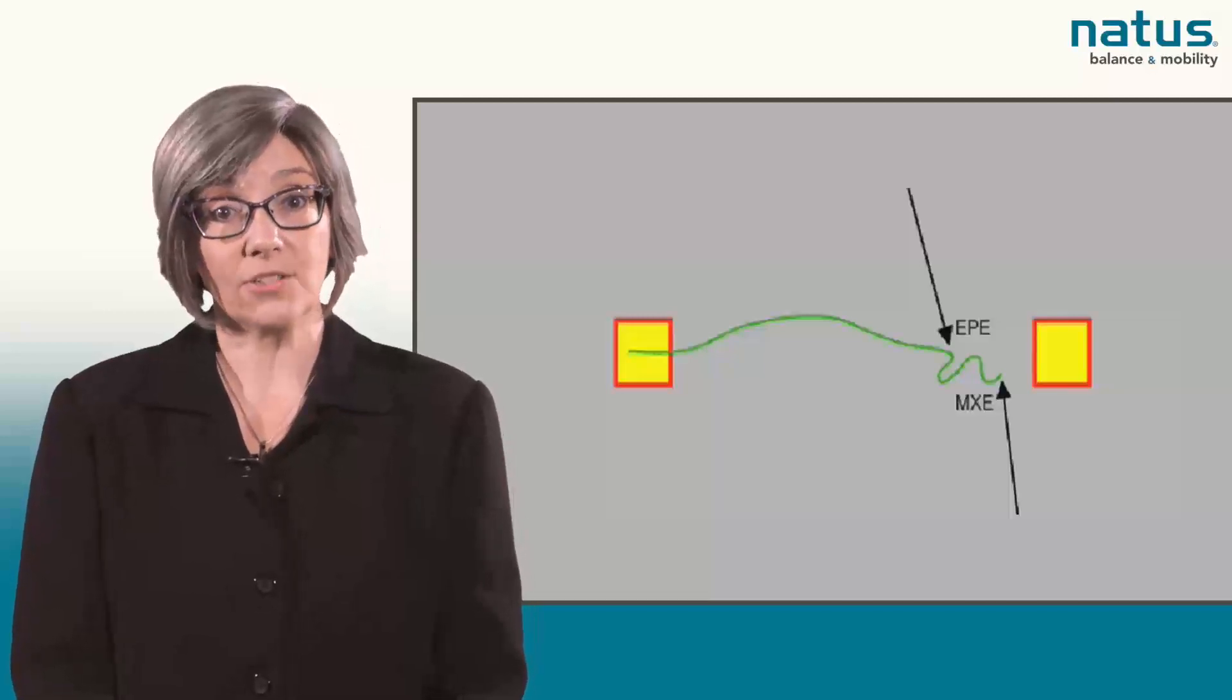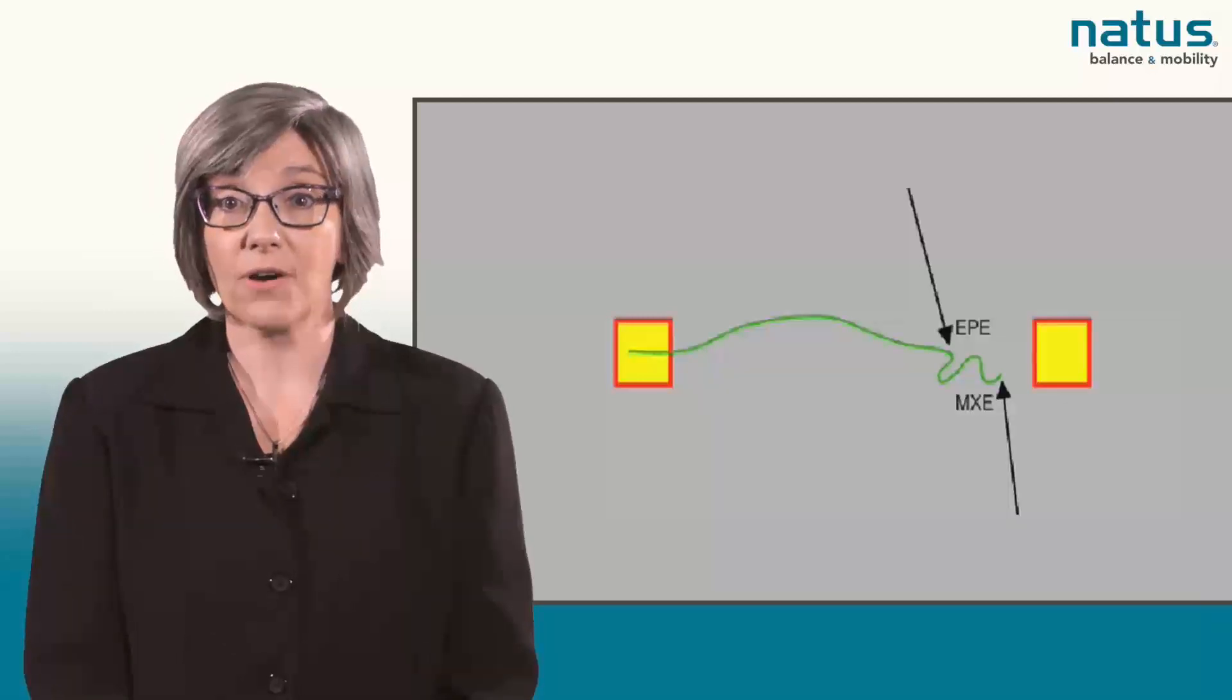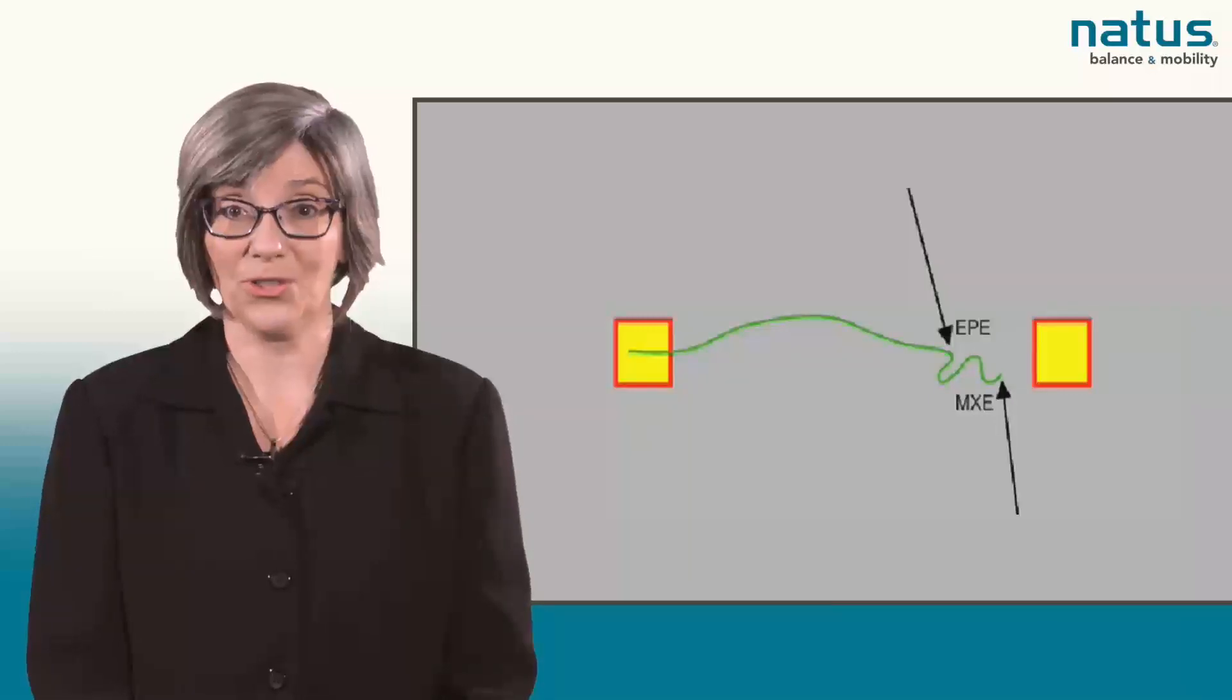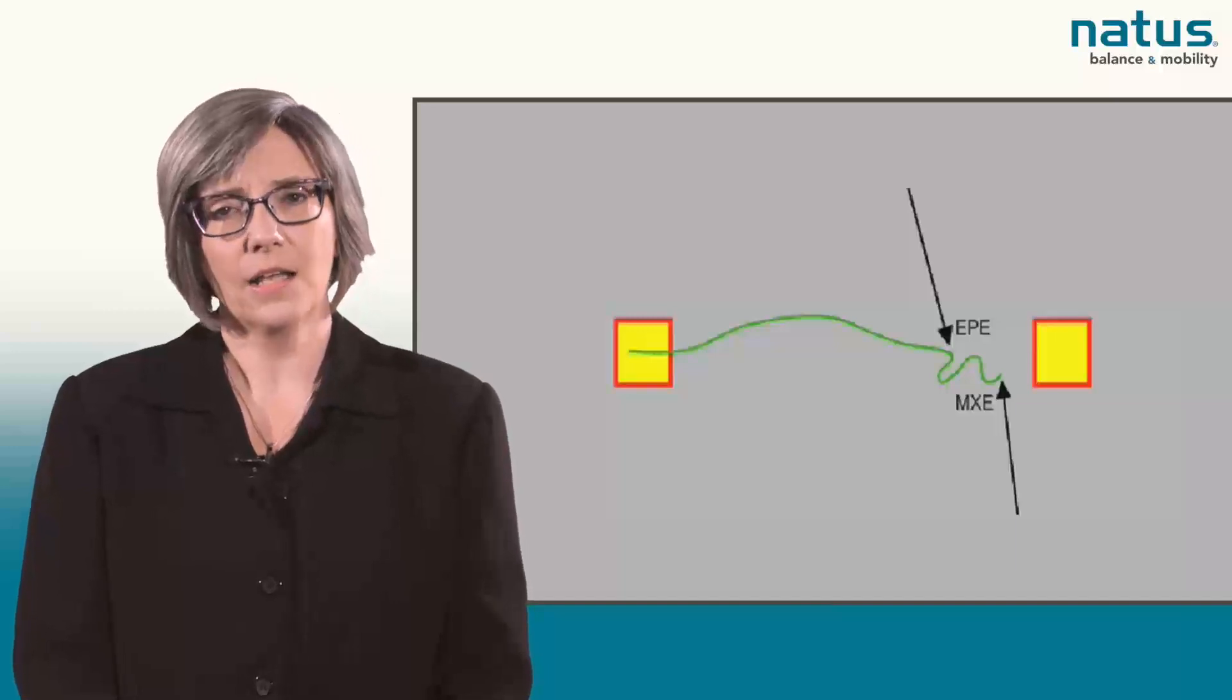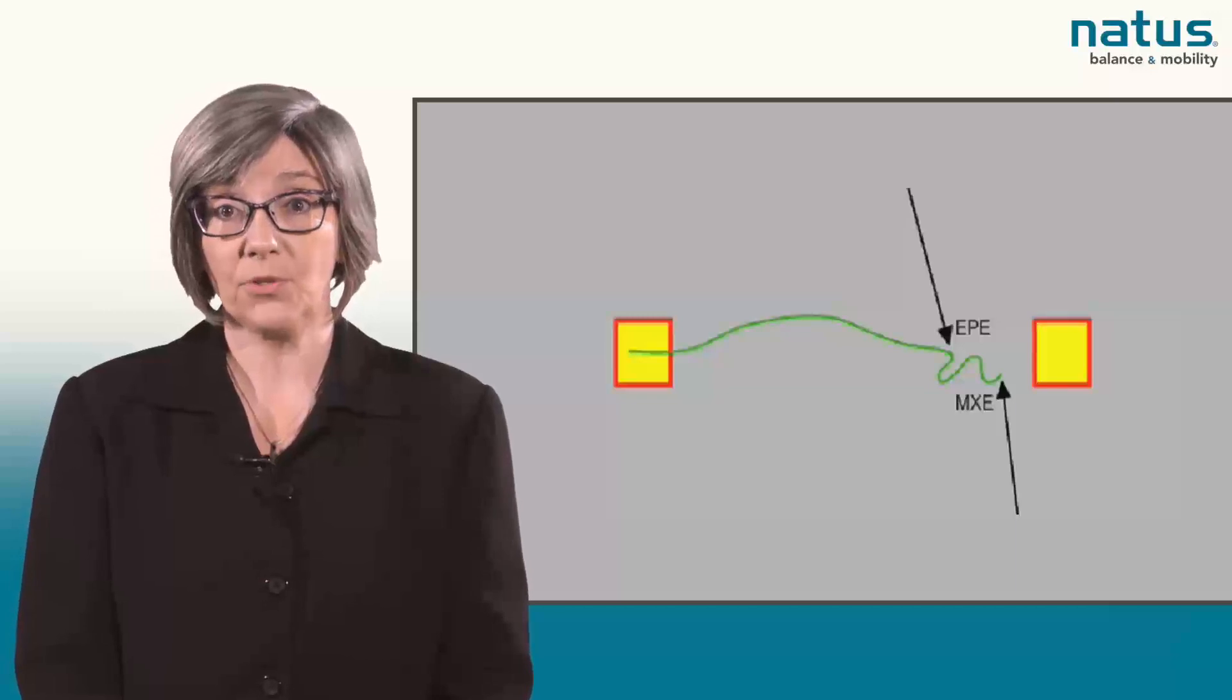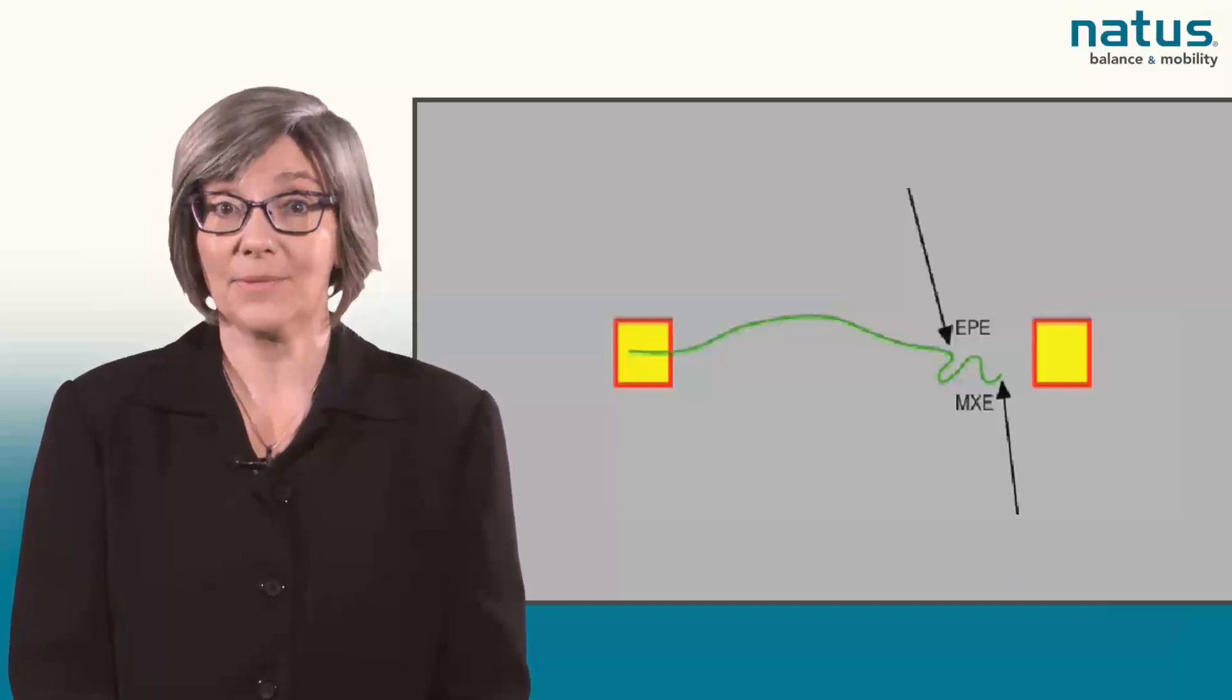The endpoint excursion provides a measure of how far the patient is willing to move on their first attempt shifting toward the target. A clinician might consider this suggestive of the individual's perception of their own safety limits.